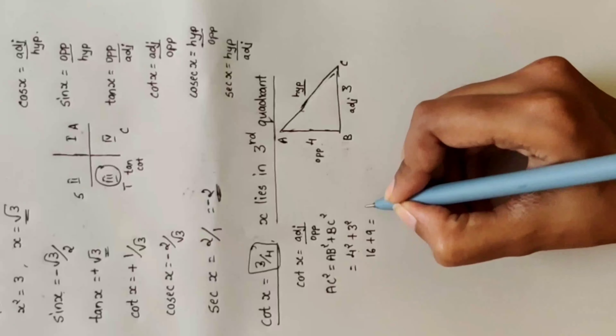Cos x = adjacent divided by hypotenuse = 3 divided by 5. Cosec x = hypotenuse divided by opposite = 5 divided by 4.